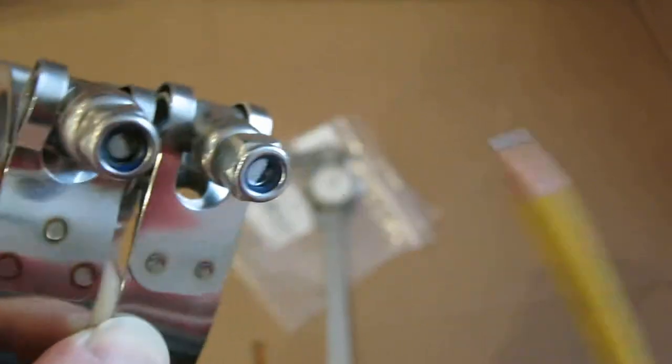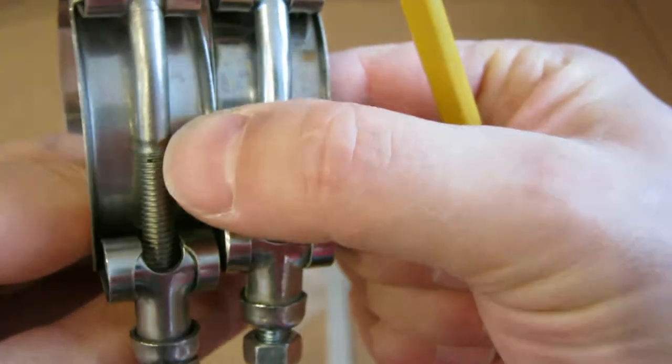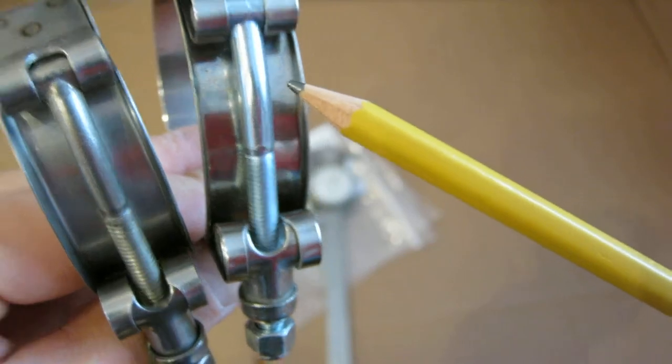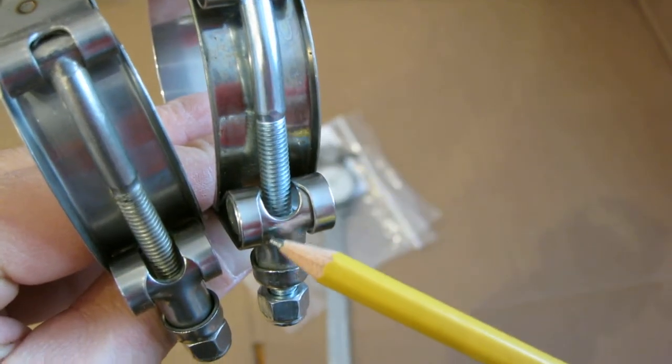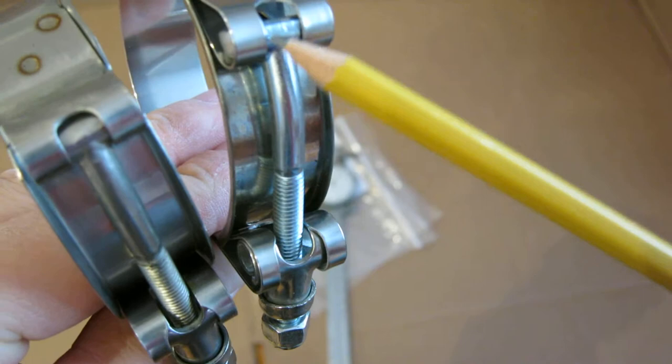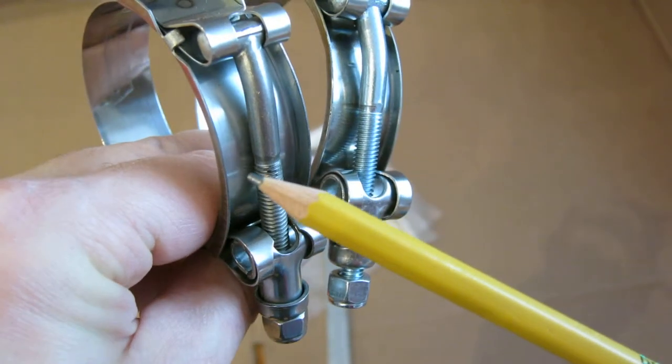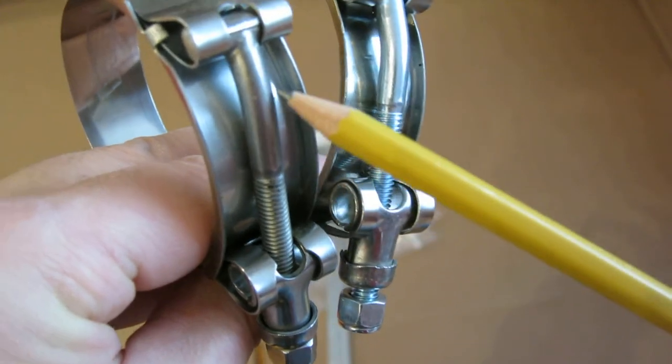On the Mishimoto, this looks like it's actually zinc coated steel. The t-bolt itself looks like it's zinc coated steel.